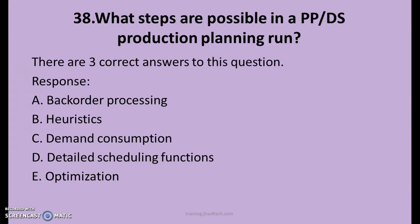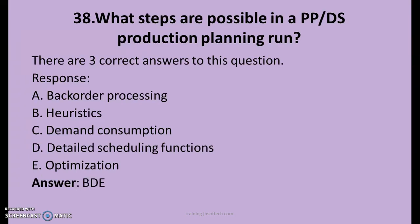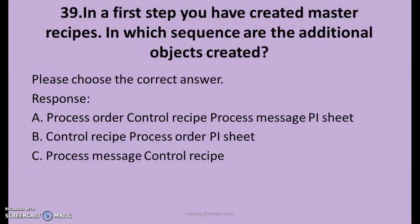38th question. What steps are possible in a PPDS production planning run? There are three right answers. A. Backorder Processing, B. Heuristics, C. Demand Consumptions, D. Detailed Scheduling Functions, E. Optimization. The right answers are B, D and E: Heuristics, Detailed Scheduling Functions, and Optimization.